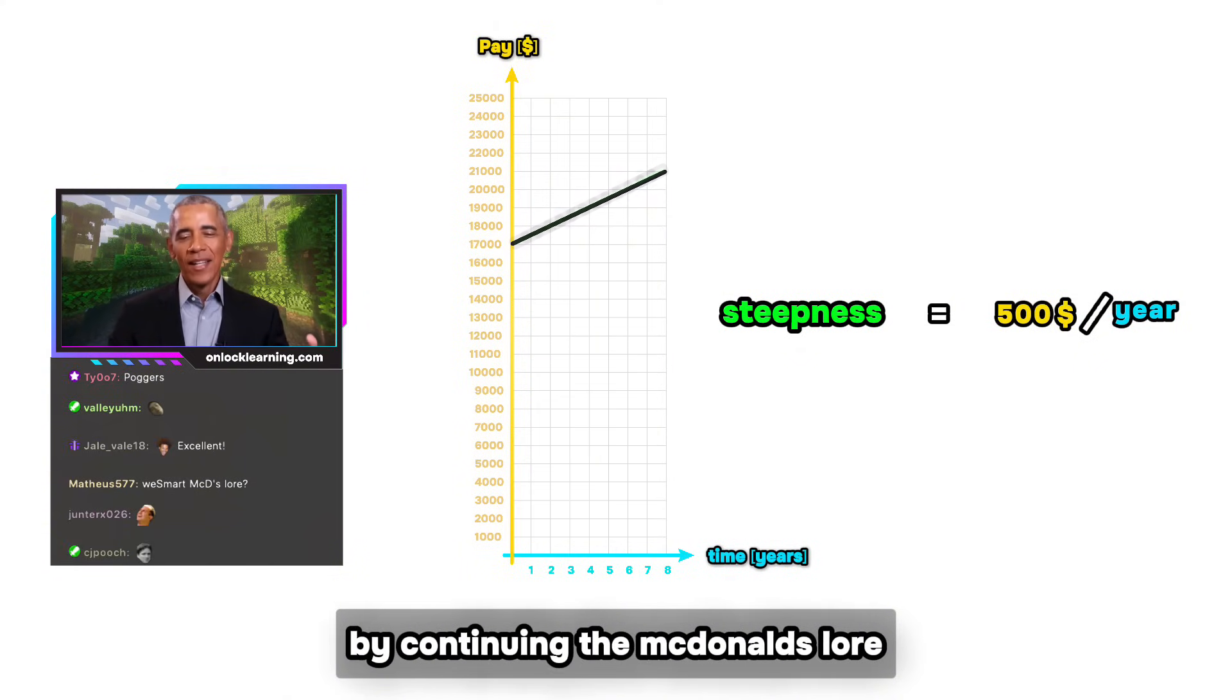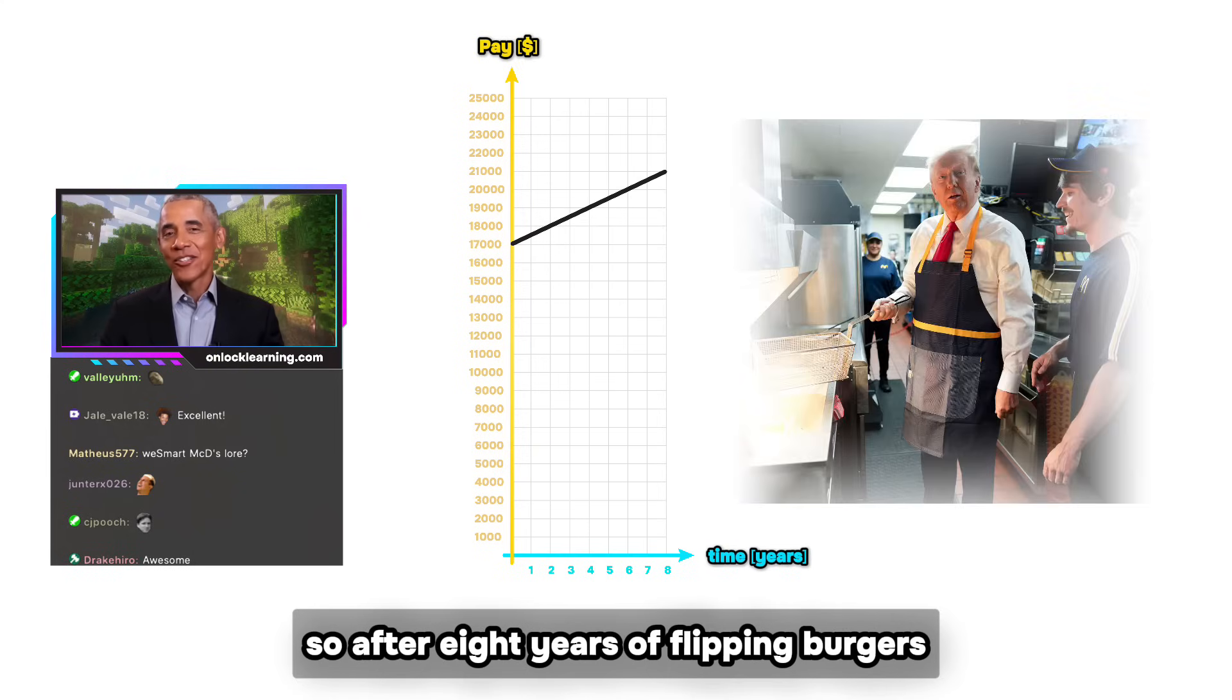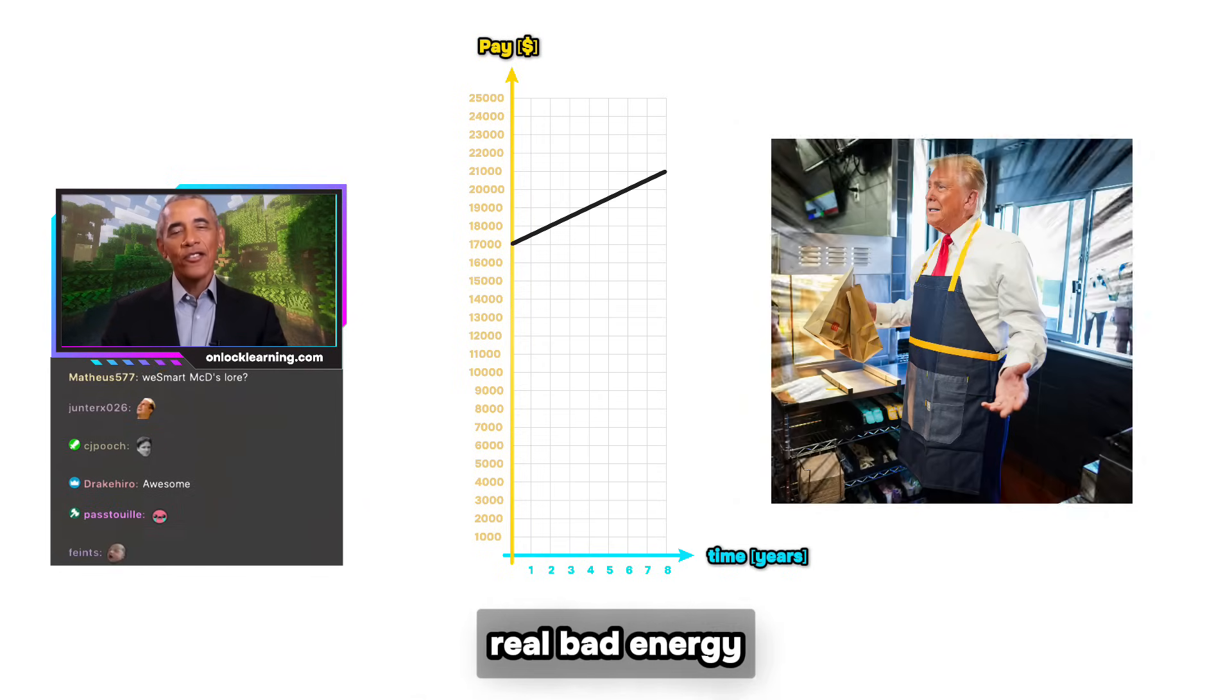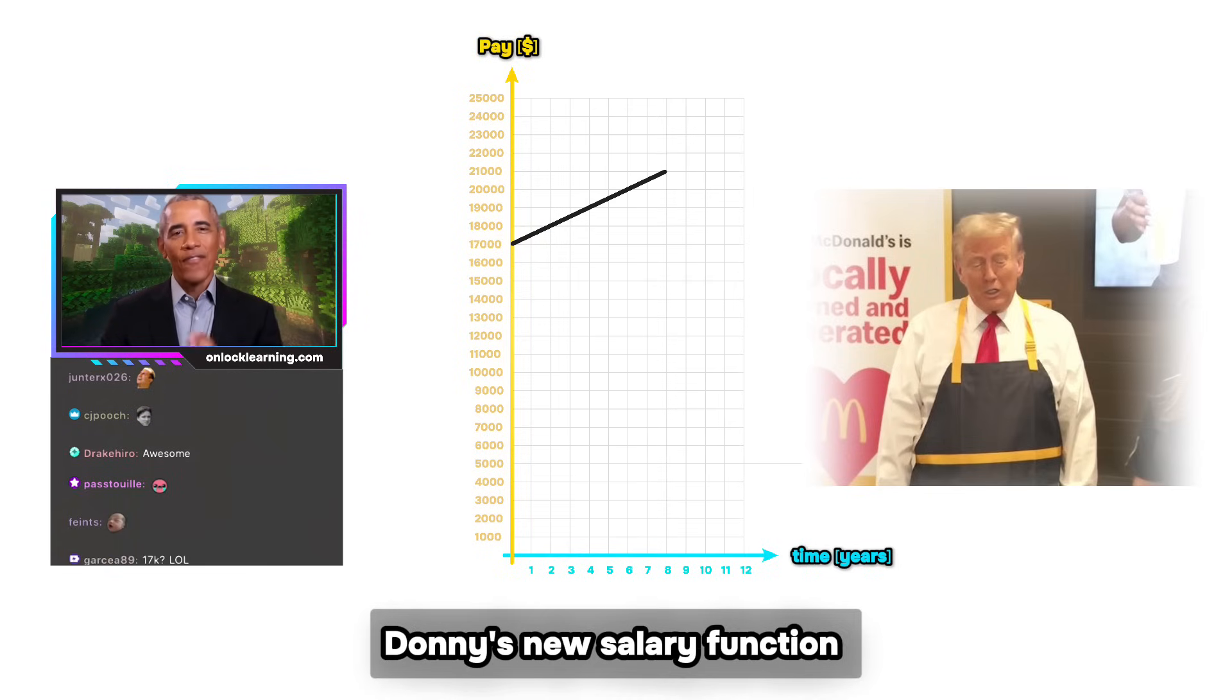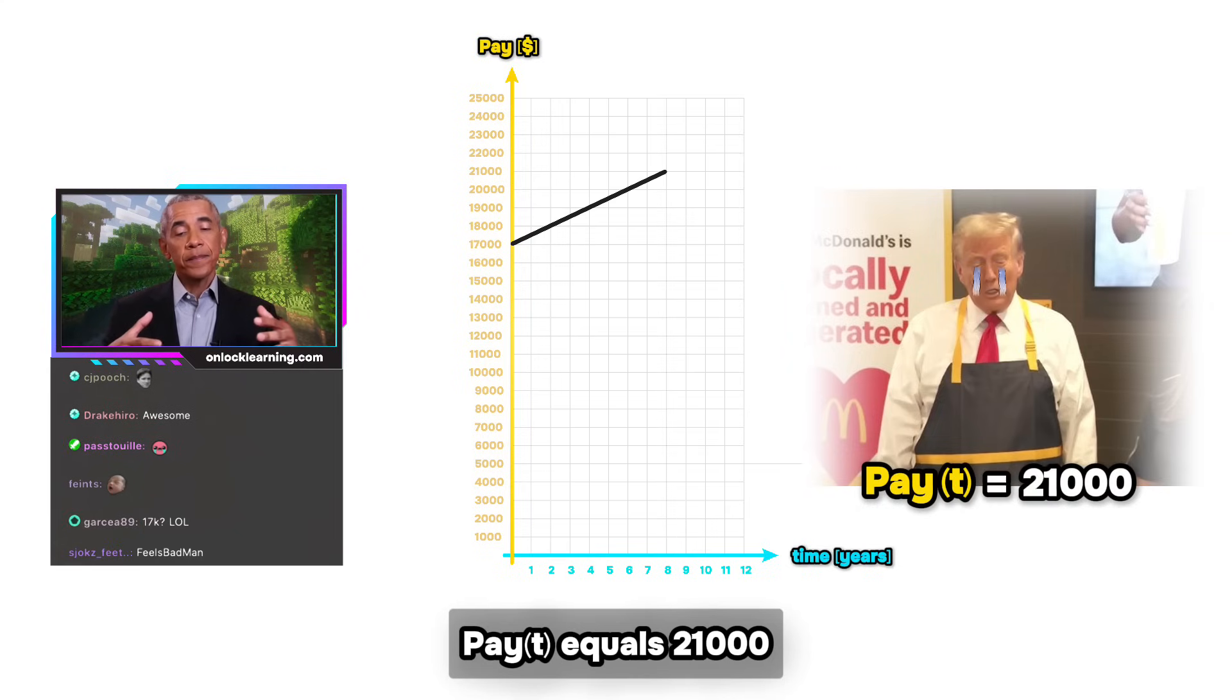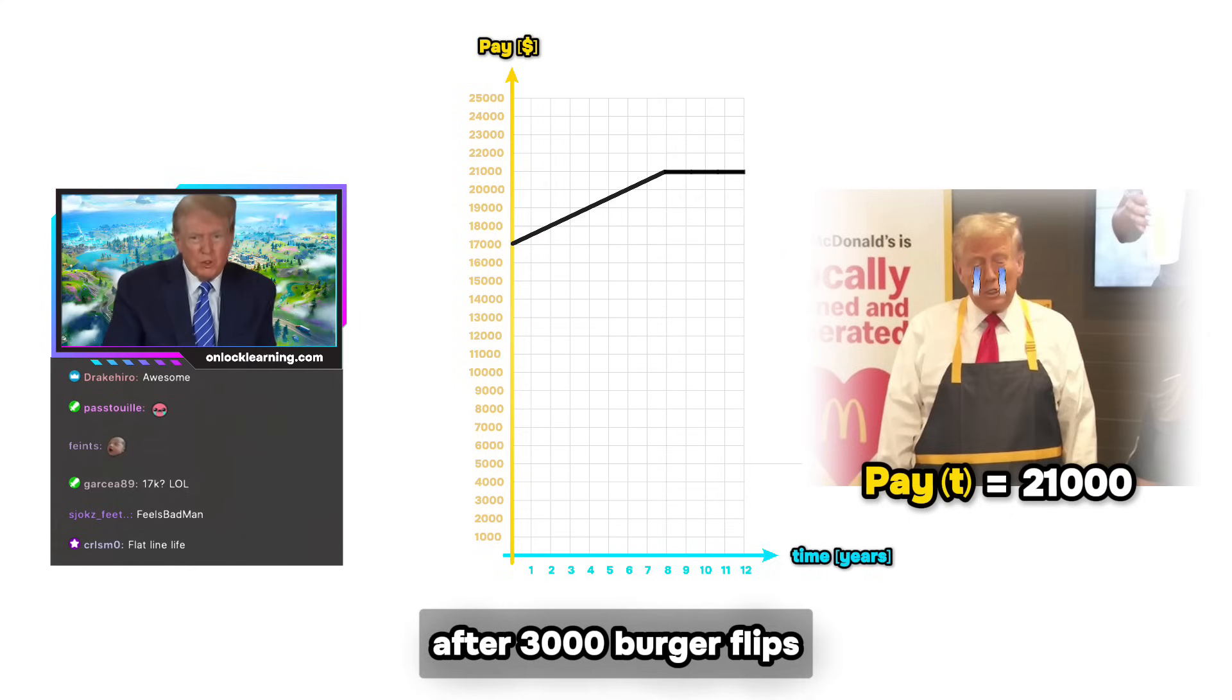Okay, now let's lock what we've just learned in by continuing the McDonald's lore. Awesome. So after eight years of flipping burgers, Donnie's manager notices he's starting to give off real bad energy, and he decides that for the next four years Donnie's new salary function is going to just be pay(t) equals 21,000. It'd just be a flat line on the graph. By the way chat, you guys try smiling after 3,000 burger flips.